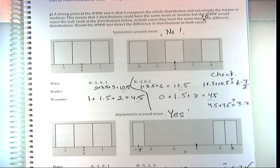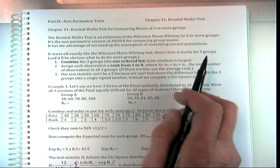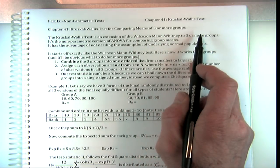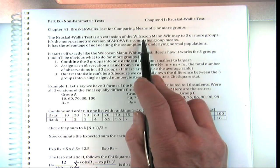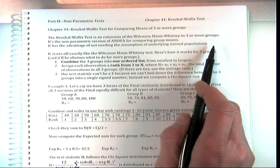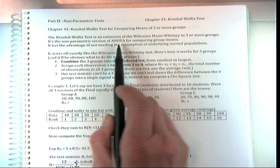We'll finish everything today — we'll do both of these and also the Spearman rank order correlation coefficient, which is the nonparametric equivalent of our standard correlation coefficient. We're just going to change everything to ranks. This will be the last lecture over course content, and then the next two lectures we can have review for the final. All your homework is now posted.